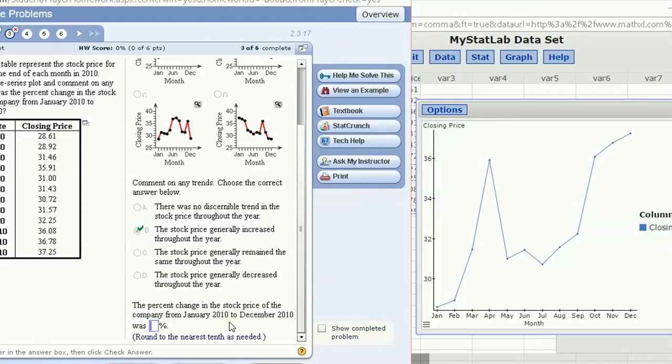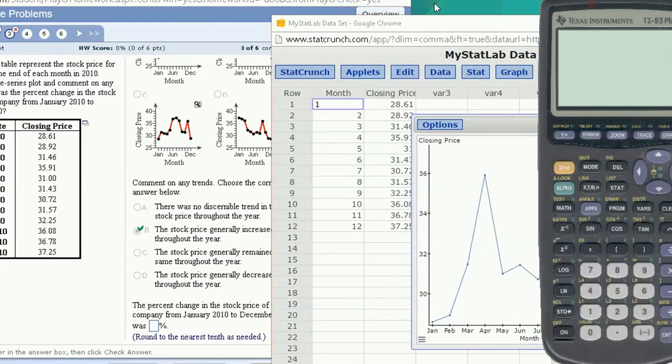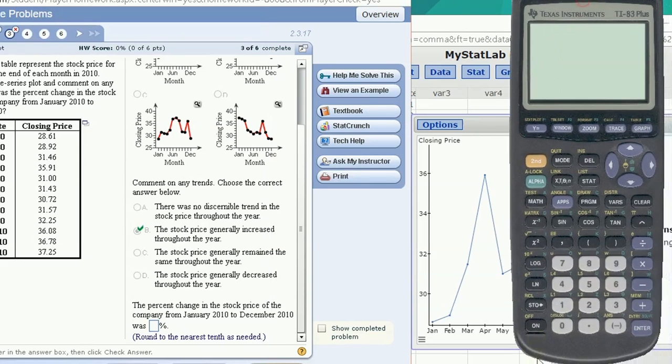The percent change from January to December. To find the percent change, what we want to do is first find what was the change. So take the January and December price difference, so 37.25, that was the December price, minus 28.61. 8.64. That was the price difference.